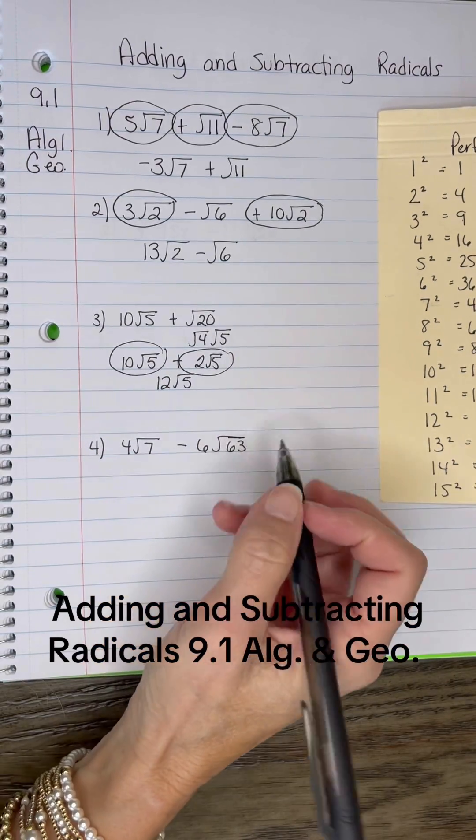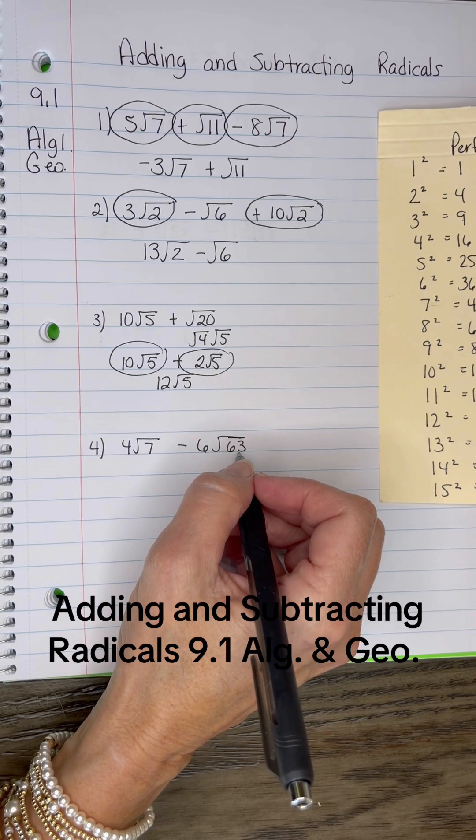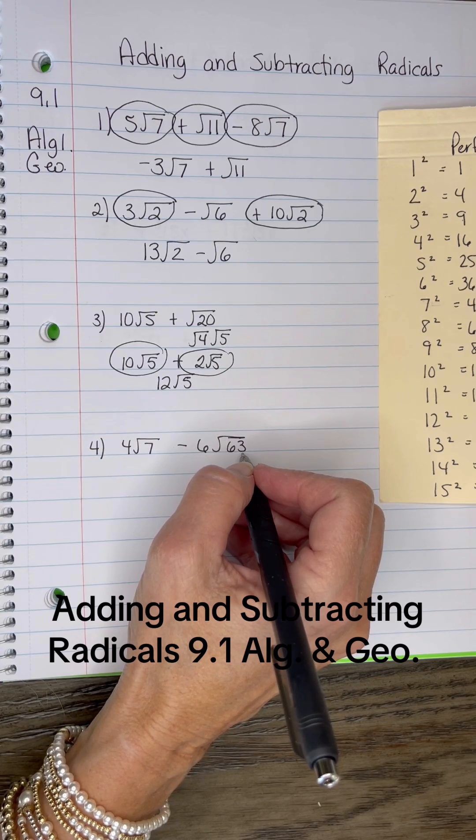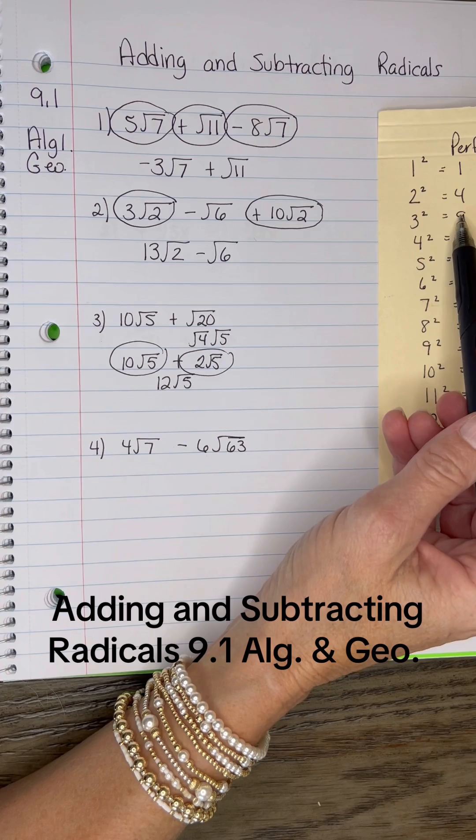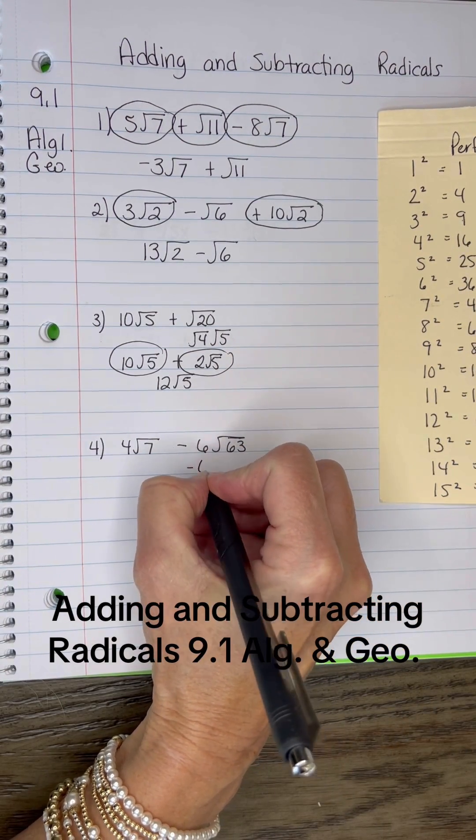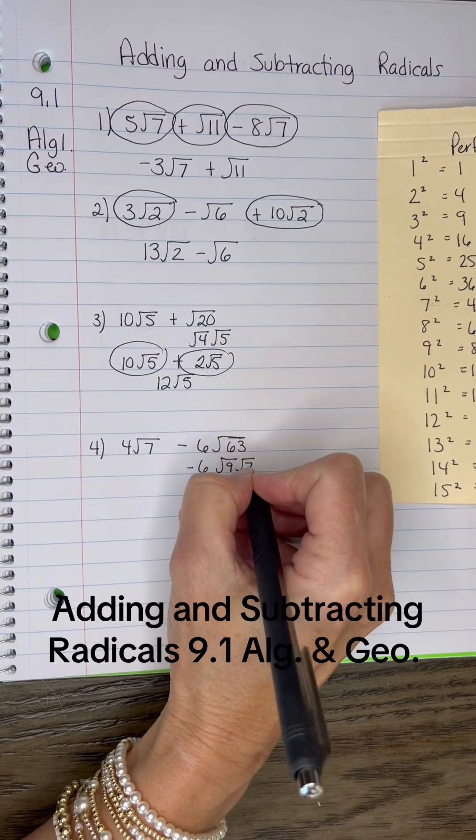And on this one, this is a 7. This is not a 7, but I think I can make it a 7. What goes into 63 in my perfect square list? Well, 9 does. And 9 times 7 is 63. So I'm going to change this to negative 6 times √9 times √7. 9 times 7 is 63.